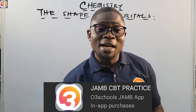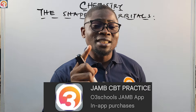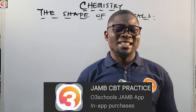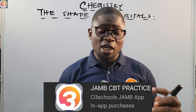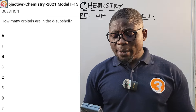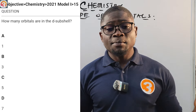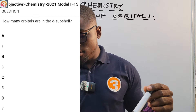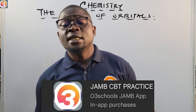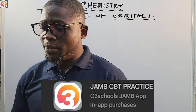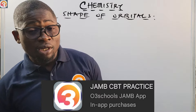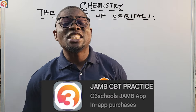This tutorial is sponsored by the O3Schools JAMB CBT practice app. For a JAMB CBT exam, you need a good practice app, and that's where the O3Schools JAMB app comes in — it is stuffed with all you need to succeed. Here is a 2021 question, number 15: how many orbitals are in the D subshell? A) 1, B) 3, C) 5, D) 7. I'll come back to this question at the end of class.